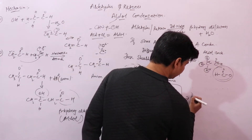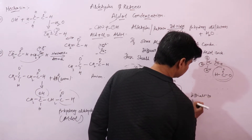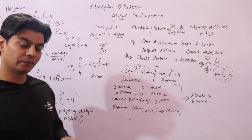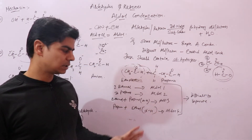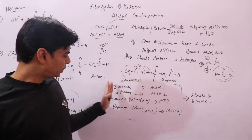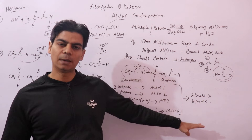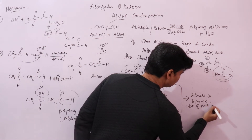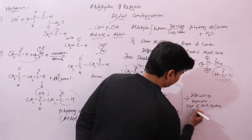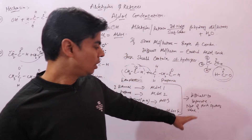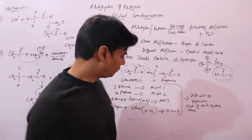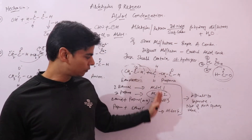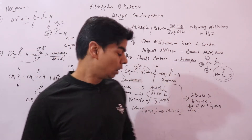These four products are difficult to separate, and that is why this reaction is not of much value from a synthetic point of view. From a synthetic point of view, it means you cannot reliably use this reaction to make a specific compound. If you want to separate, say, aldol two from this mixture of four products, it would be very difficult to isolate any one product.